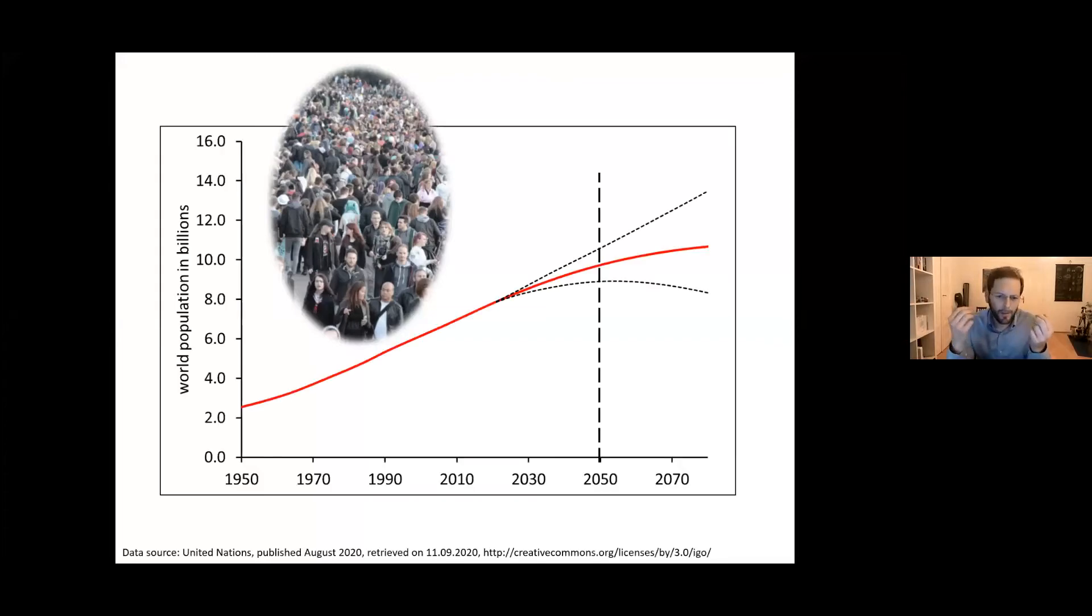The first challenge that we face is the growing world population and its industrial needs. Calculations are dependent on varying assumptions, but the community is quite certain that we will see a sharp increase until 2050 and that we might even crack the 10 billion barrier by then.